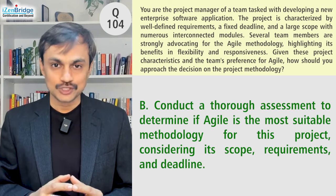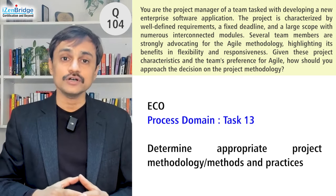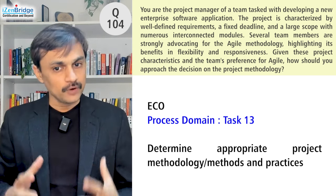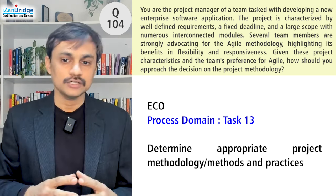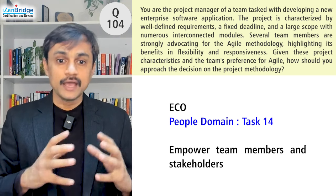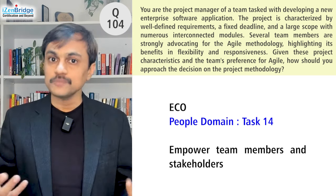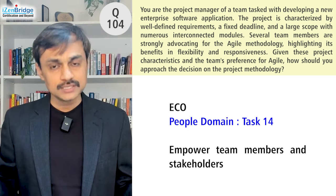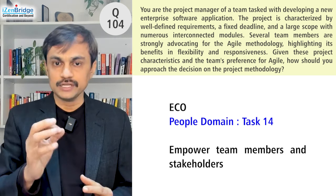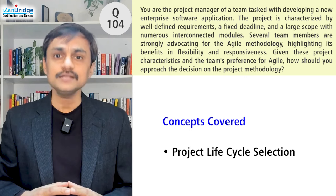Looking at the ECO, this question is definitely focusing on Task 13 of the Process domain — determining appropriate project methodology, methods, and practices. It is also focusing on People domain Task 14 — empowering team members and stakeholders, because we need to give a recommendation while allowing them to find their own views and processes, rather than me always leading. We need to engage with team members in the process selection process. Overall, this question is about project lifecycle selection.